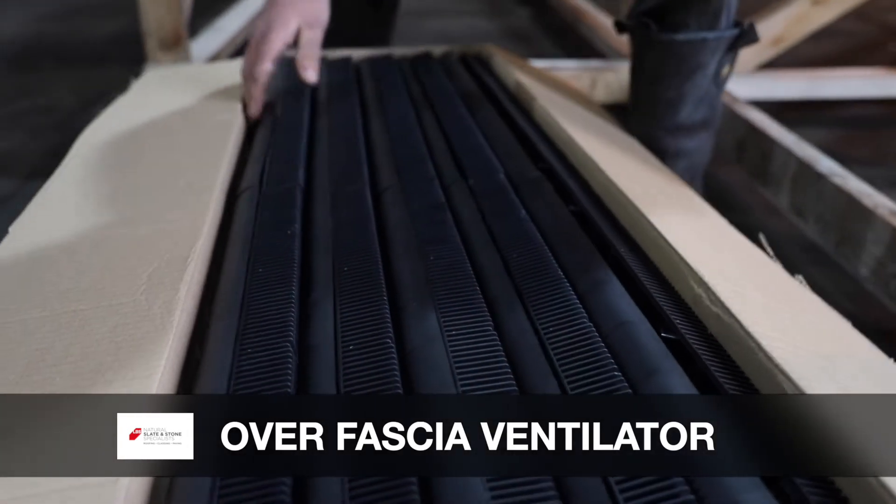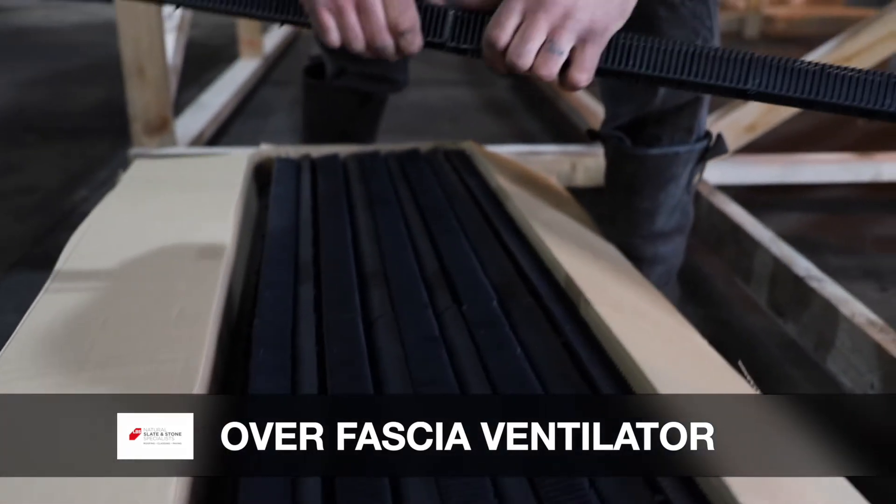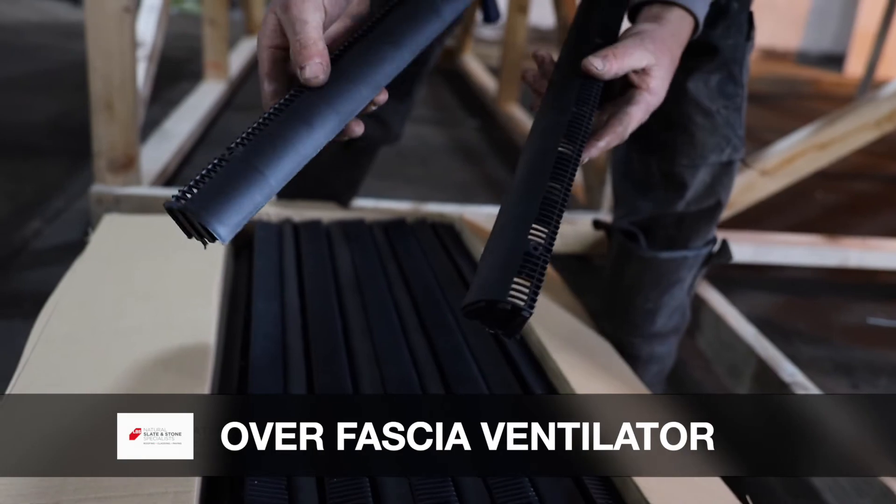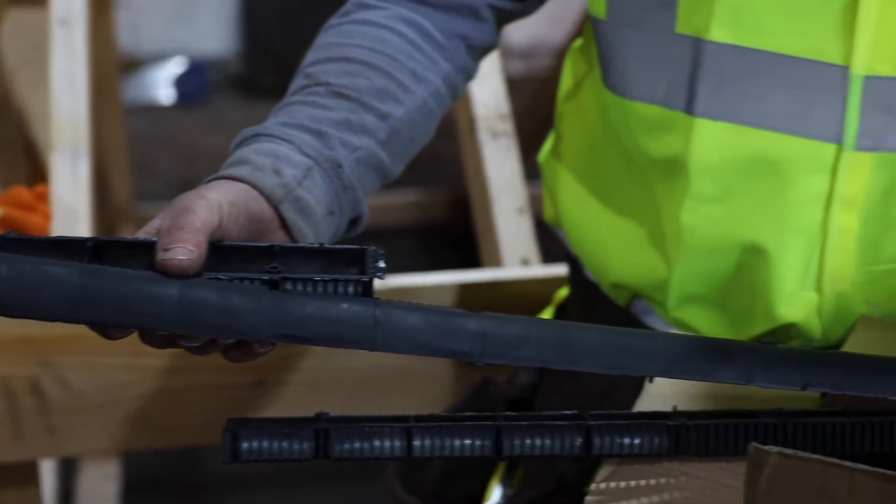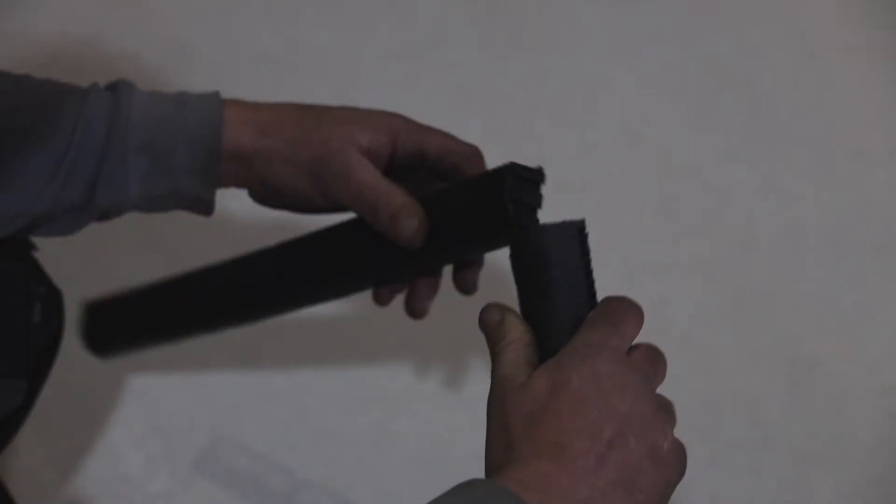Overfascia ventilators are a key component of roof space ventilation and allow airflow to pass into the roof space at eaves level between the membrane and the fascia board. LBS offer two options for overfascia ventilation.